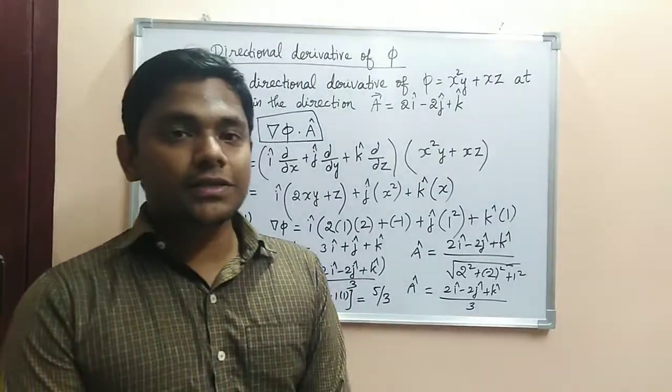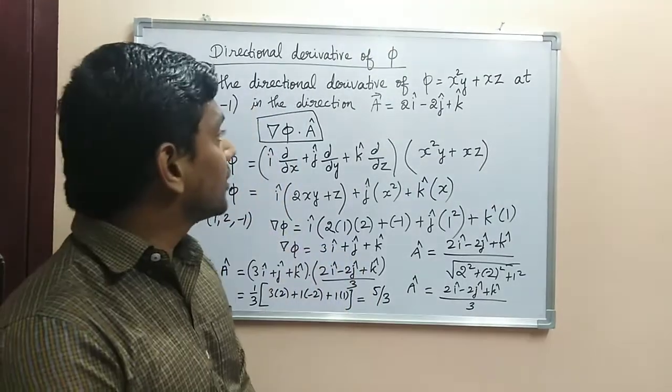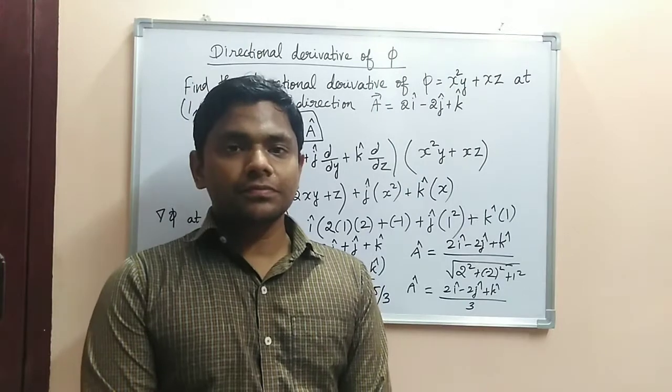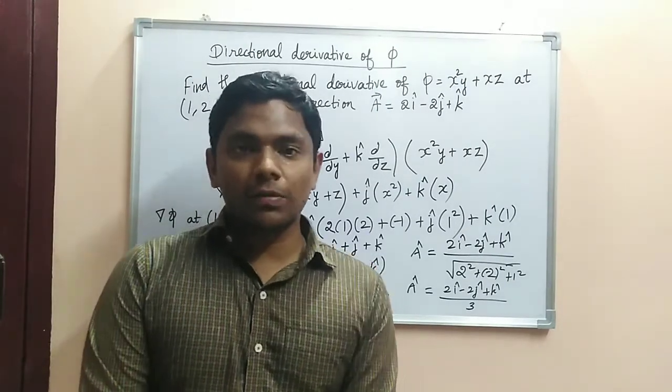This is how you have to find out the directional derivative of any scalar Phi in the direction of a particular vector. You may get problems of these kind in your CSIR NET physics.